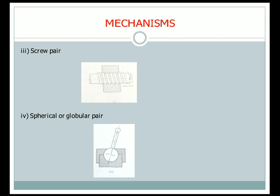The next type of pair is the spherical pair. Here there is a lever fixed inside another component, and we cannot separate these two. We can only rotate the lever with partial motion — we cannot rotate it a full 180 degrees, only up to some constrained angle such as 90 degrees. This type of pair is known as a spherical pair.